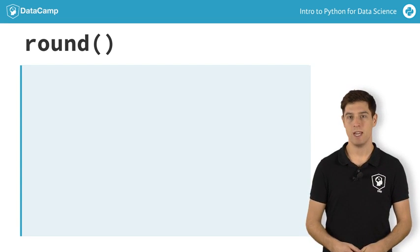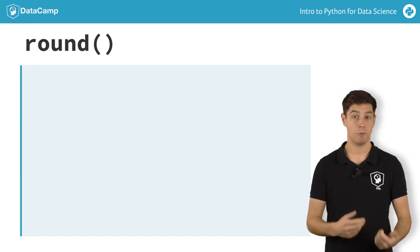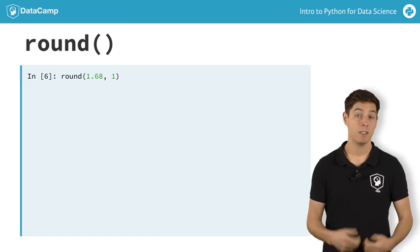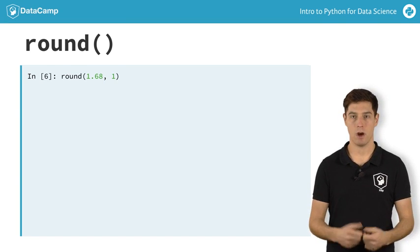Say you want to round 1.68 to one decimal place. The first input is 1.68, the second input is 1. You separate the inputs with a comma.